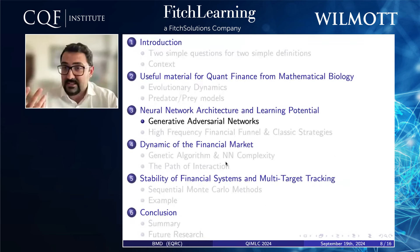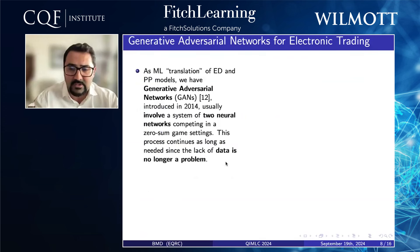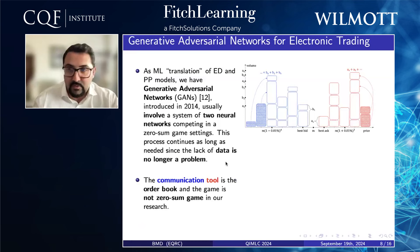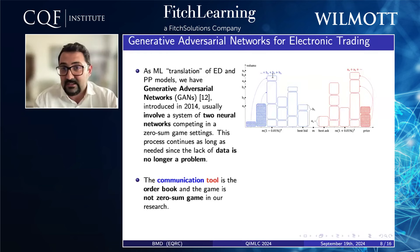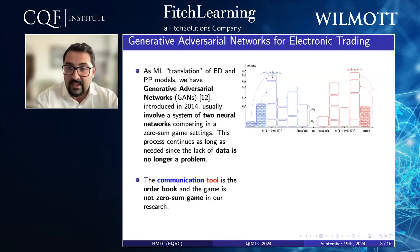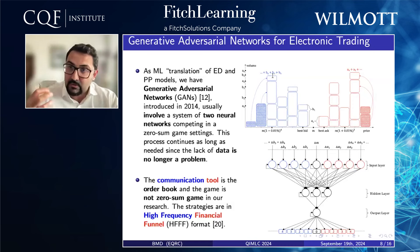How can we bring this material from evolutionary dynamics into quant finance? When you work in quantitative finance, you are familiar with the order book, which essentially represents the market. We have the best bid and the best ask, and every volume beyond the fourth best bid and ask price is reassigned to the fourth best bid, just to keep track of something not too large. We need a communication tool between different strategies.